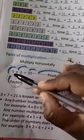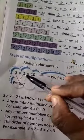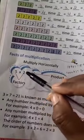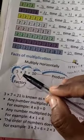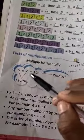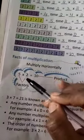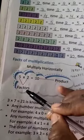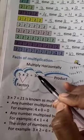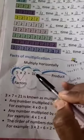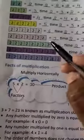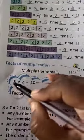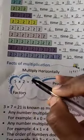This is a multiplication fact. 5, 2s are 10 — it is called a multiplication fact, and it is also called a multiplication statement. 5 into 2 is equal to 10. This is a multiplication statement.